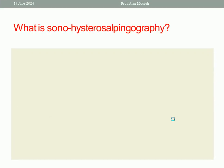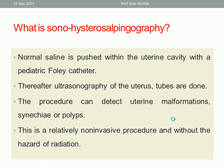What is Sonohysterosalpingography? We inject saline inside the uterine cavity via a pediatric Foley catheter, then perform ultrasound of the uterus and tubes. If the tubes are patent, the fluid will pass through the tubes to the pelvic cavity. The procedure can also detect uterine malformations, intrauterine adhesions, Asherman's syndrome, intrauterine polyps, or submucous fibroid.